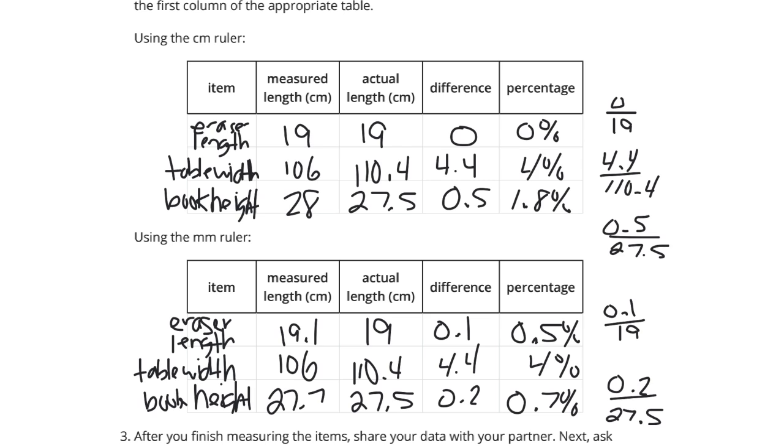And so, one of the big takeaways from this lesson needs to be that you can find the percent error by taking the amount of error, so your difference, and dividing it by the actual amount. And so, for all of these, you can see the difference divided by the actual.